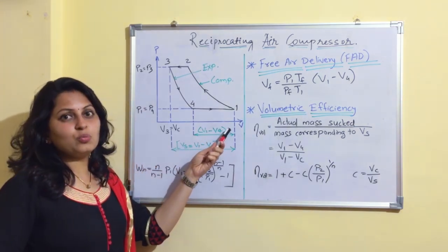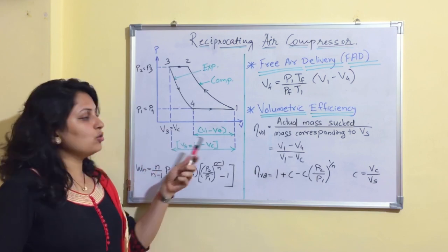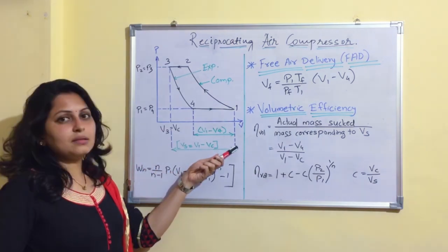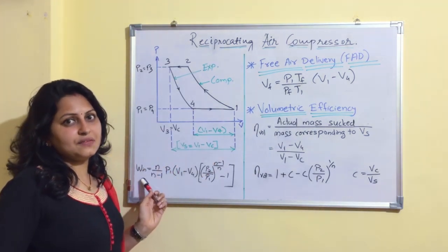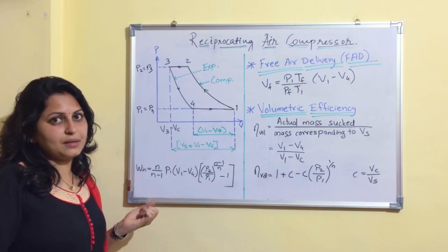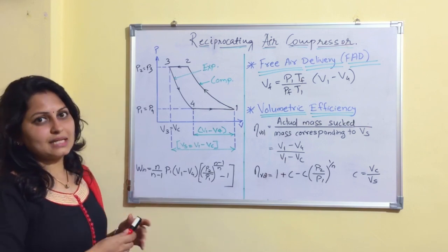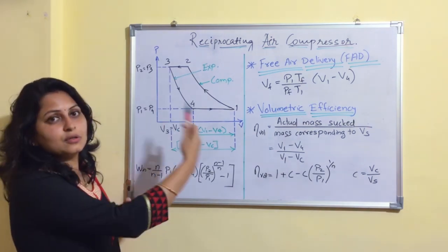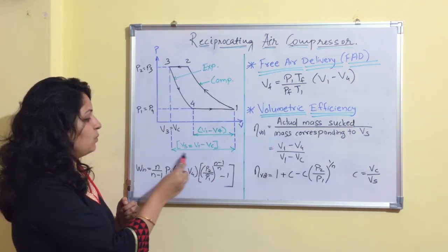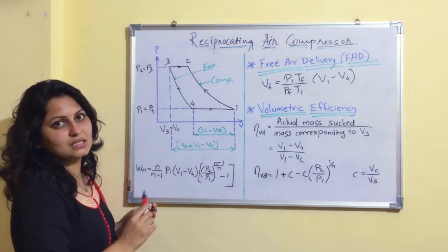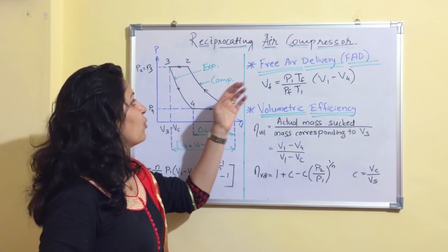The effective swept volume is V1 minus V4, and the swept volume is V1 minus Vc. When we include clearance in the formula for indicated work input, V1 is simply replaced by (V1 − V4). Moving on, free air delivery is the volume corresponding to atmospheric conditions, and its formula is given accordingly.